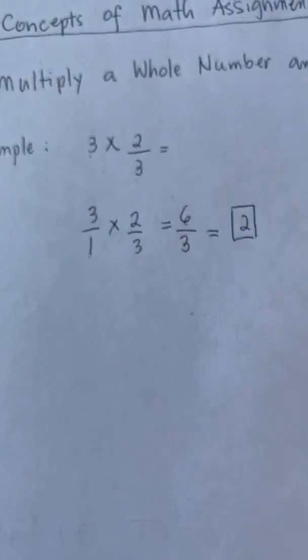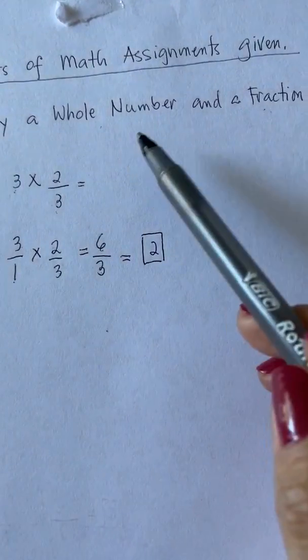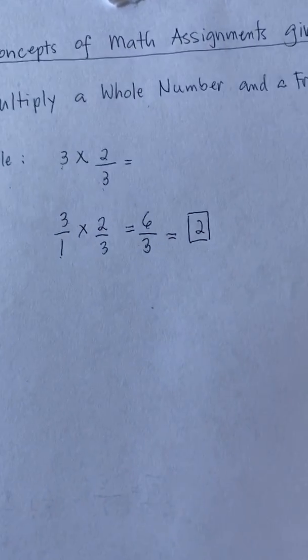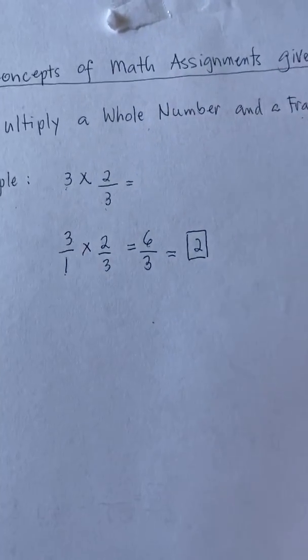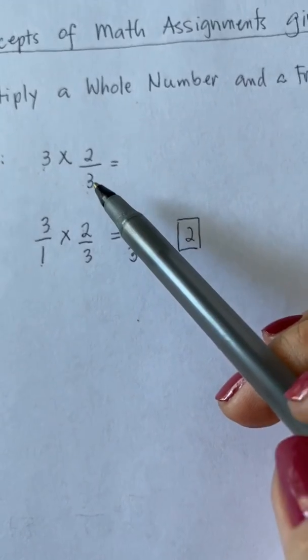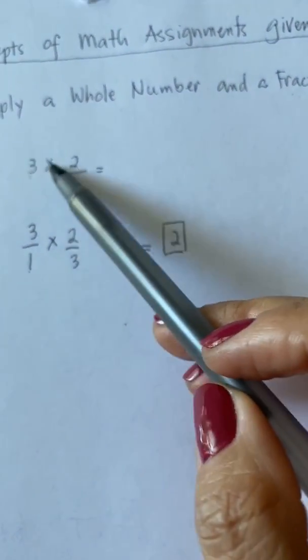There is also another way in multiplying a whole number and a fraction. And that way is to have it written in an addition equation. So we go back to our example. Our fraction is 2 thirds. It says 3 times 2 thirds.